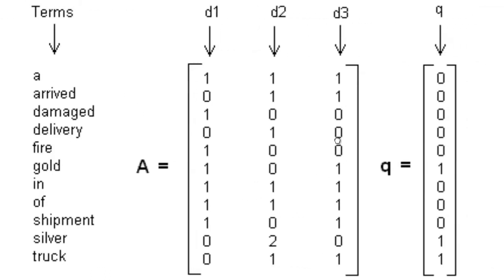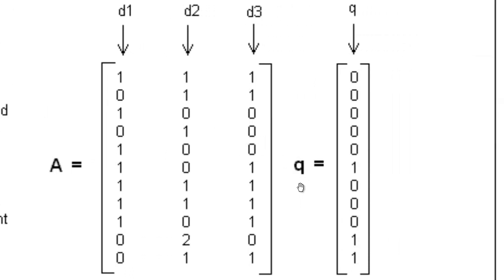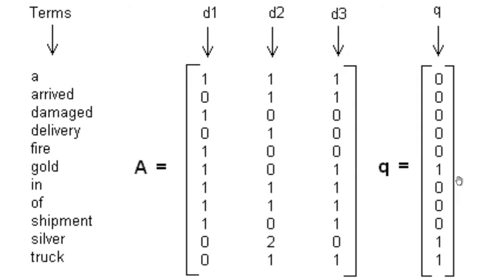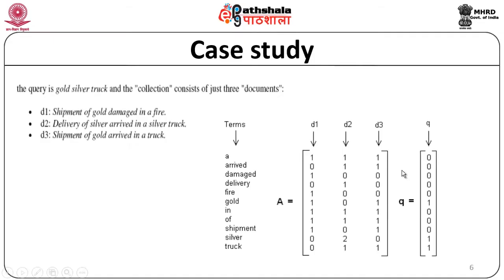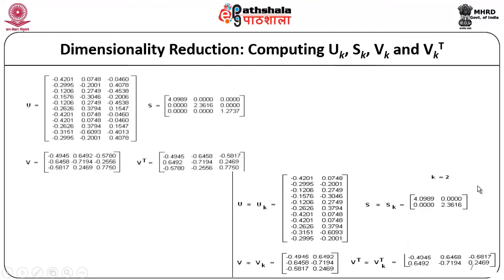What we are going to do is represent the given query — gold, silver, truck — and identify from matrix A what documents are relevant to query Q. The given query Q is also represented as a vector of terms, where gold occurs once, silver occurs once, and truck occurs once; the rest of the elements are filled with zeros. Having understood the documents represented using matrix A, now let us analyze how this will be done using dimensionality reduction SVD.